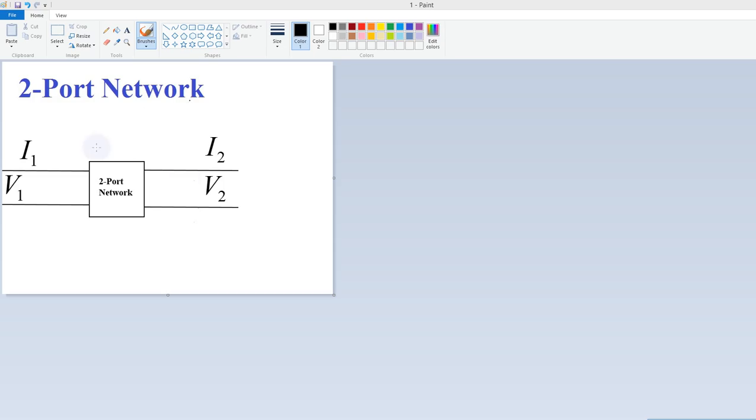Here you can see a two-port network is shown. It has a primary side and secondary side. In the primary side your i1 and v1 is there, or you can say v1 i1, and in the secondary side your v2 and i2 is there. So let's see what is the trick.